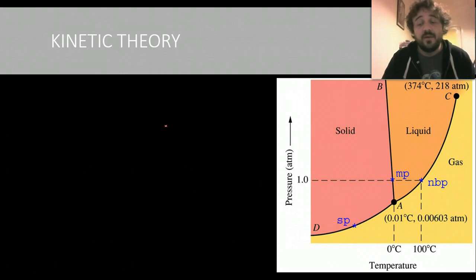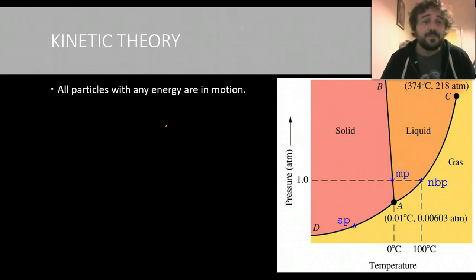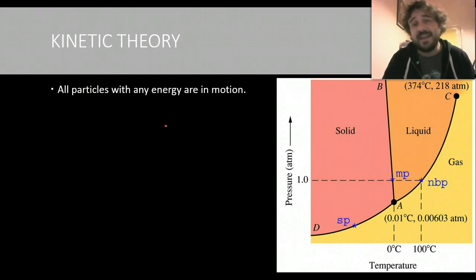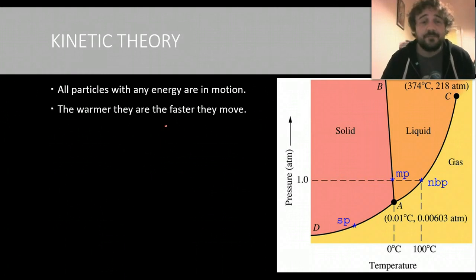So kinetic theory, what is it? Basically, all particles with any energy at all are in motion. So anything above absolute zero has energy, and therefore the particles are moving. So the warmer they are, the faster they move. Now this depends on the particles. Some particles at room temperature are going to move a lot faster than other particles at room temperature.